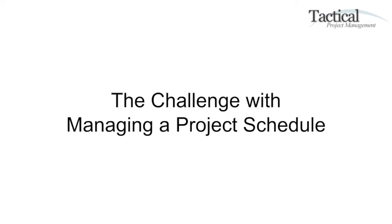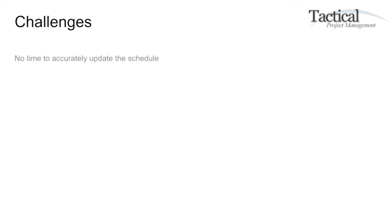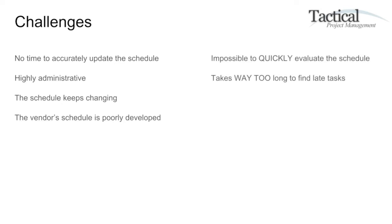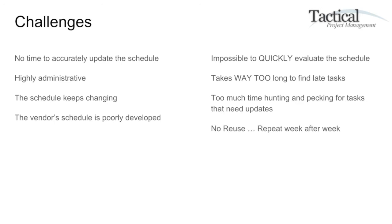The challenge of managing a project schedule — there are many. There's no time to accurately update the project schedule. It's highly administrative. The schedule keeps changing. The vendor's schedule is often poorly developed. It's impossible to quickly evaluate the project schedule. It takes way too long to find late tasks. Too much time is spent hunting and pecking for tasks that need updates. And every week, we need to repeat this again and again. There's no reuse.